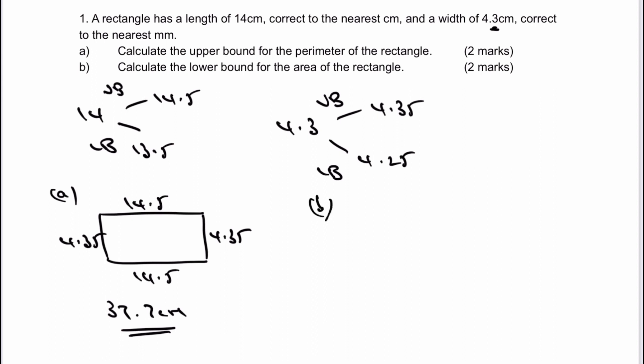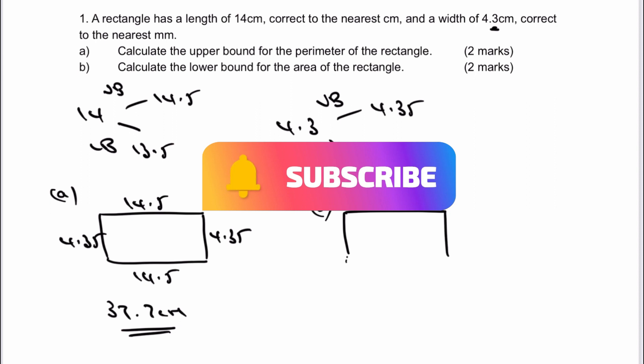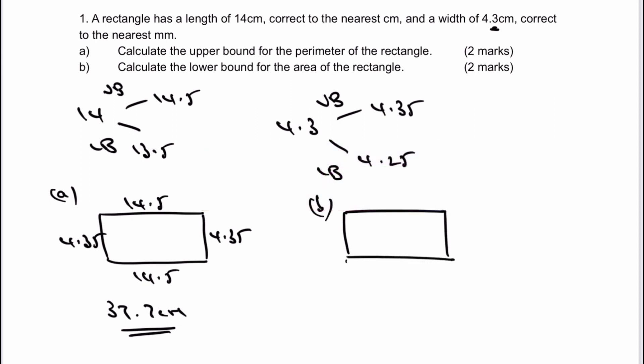Let's have a look then at the lower bound for the area. Well, the area is two dimensions multiplied together. In this case, it's going to be the lowest amounts, 13.5, multiplied by 4.25, which means my area as a lower bound is going to be 57.375 centimeters squared. And that's the answer to the question.